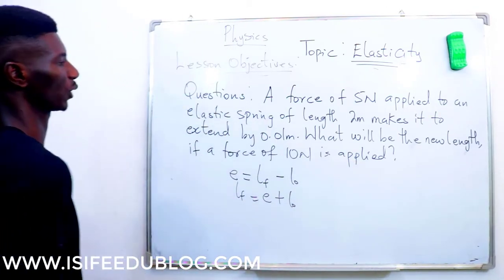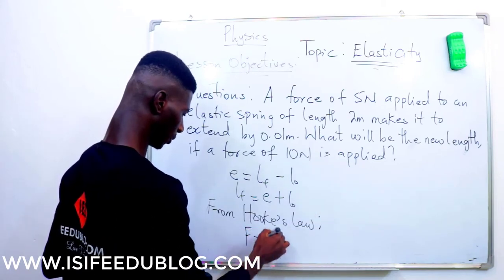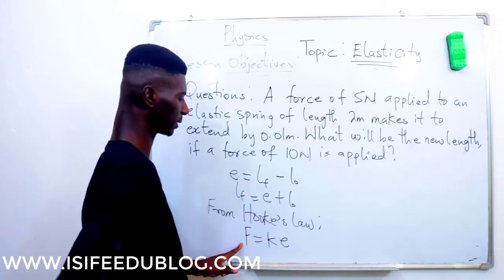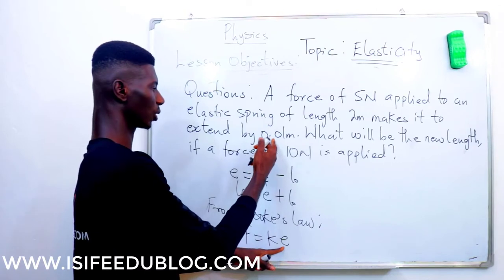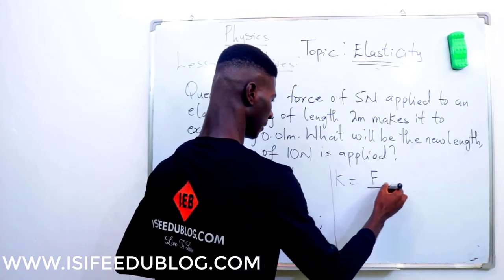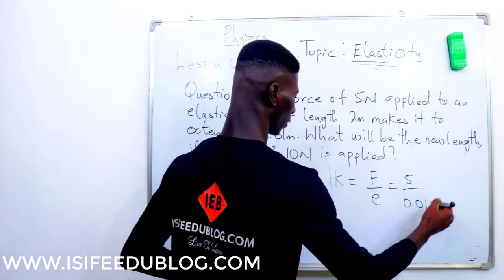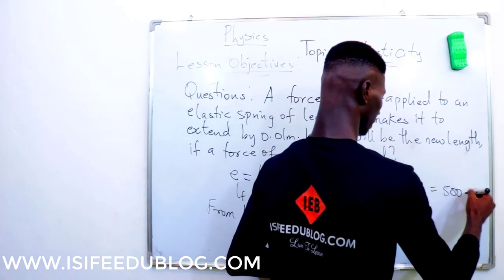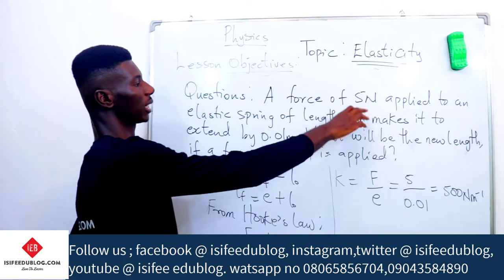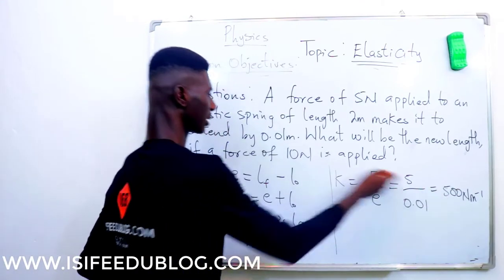For us to find the new length, we first have to get the force constant using the first equation. From Hooke's Law, force equals force constant times extension, i.e., F = KE. We know the force is 5 Newtons and the extension is 0.01 meters. So the force constant K equals F over E, which is 5 divided by 0.01, giving us 500 Newtons per meter. The force constant does not change, no matter how many forces you apply to this particular elastic spring.